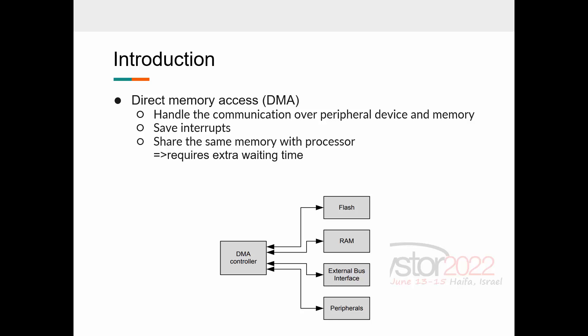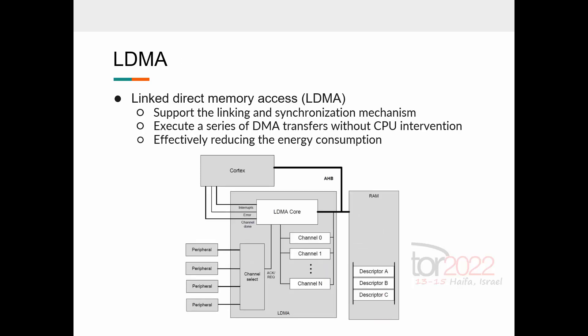To support such bulk input-output, the direct memory access mechanisms have been proposed. A DMA controller is set up by the processor to perform bulk transfer directly between input-output and a designated region in memory. And it saves interrupts because processor does not need to get an interrupt on every sample, just one interrupt for every bulk transfer unit. So, the processor can remain in sleep mode for longer or can execute other tasks. Because DMA shares the same memory with processor, it will require extra waiting time. Fortunately, modern processors make use of caches. So, the extra waiting time makes a minimal impact on the processor performance. To reduce disruptions to the processor, the linked direct memory access has been proposed.